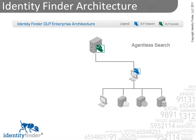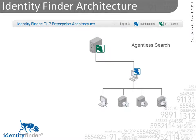You can also search other computers, web servers, or database servers without installing Identity Finder, using agentless searching. From a single administrative workstation, you can remotely search other desktops, file servers, or any network device with a hard drive without installing Identity Finder on those machines. The agentless search policies may be set, monitored, and controlled by the centralized DLP Enterprise Console.